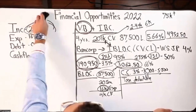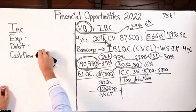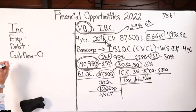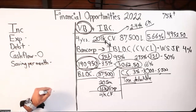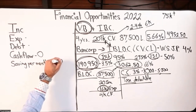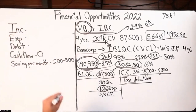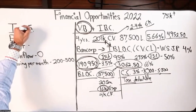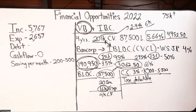Go ahead and share your four major numbers — what are you bringing in per month, what are you spending, and you said cash flow is zero because you're saving money. How much are you saving per month? After removing all expenses, probably like $200 to $500, whatever is left after all bills. Income is $5,767 and expenses are $2,657 roughly. Where's all the other money going?